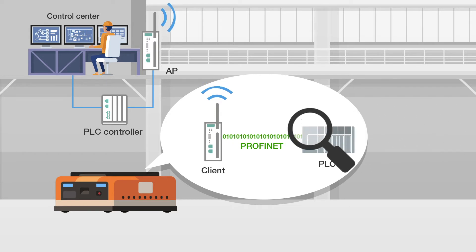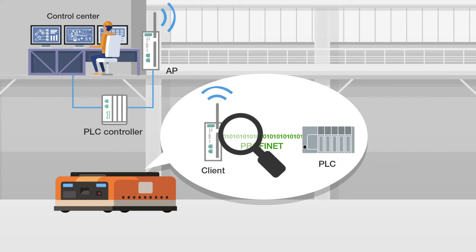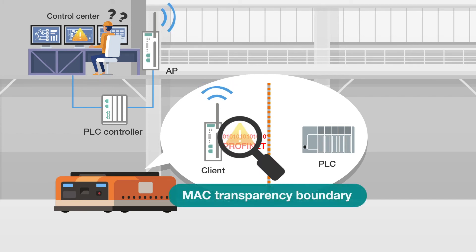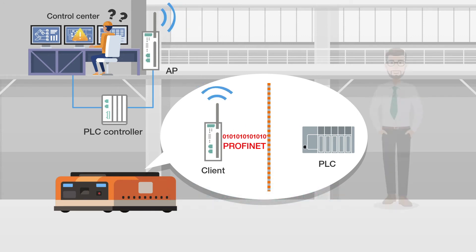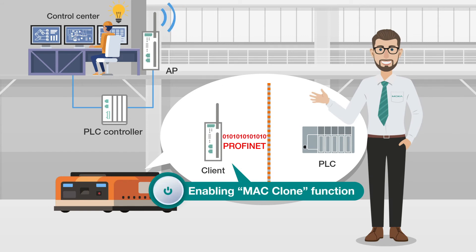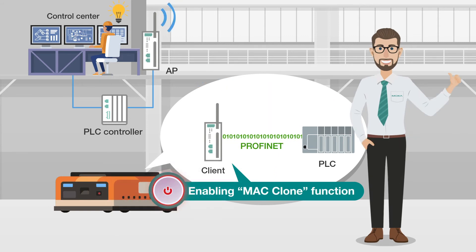If standard Wi-Fi client connectivity is used without any enhanced functionality for PROFINET, the PLC controller cannot identify the MAC address of the PLC. This situation is known as a MAC transparency boundary. To eliminate the MAC transparency boundary for PROFINET over wireless, you need to enable a software function called MAC Clone on the Wi-Fi client device to build the wireless connection.